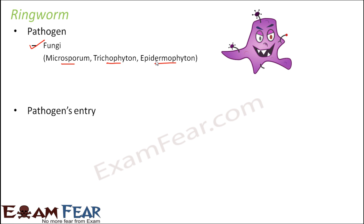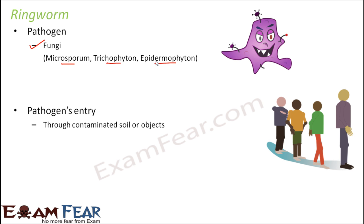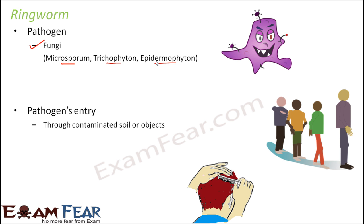They enter inside the body through contaminated soil or objects. If somebody is already suffering from ringworm, a normal person should not use or share their utensils, handkerchief, clothes, or towel. It gets spread through combs as well, because ringworm happens very commonly on the skull and head area.